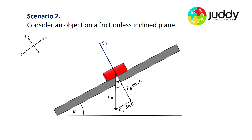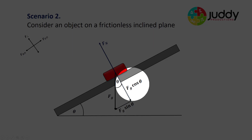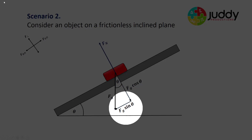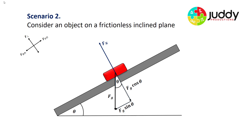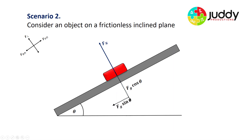We can resolve our gravitational force into two components. First, there is a gravitational component perpendicular to the surface, which by basic right angle trigonometry is Fg cos theta. The second component, Fg sin theta, is the component of the gravitational force operating down the plane. So we've broken down Fg into its two components following the convention of perpendicular to the plane and parallel to the plane.